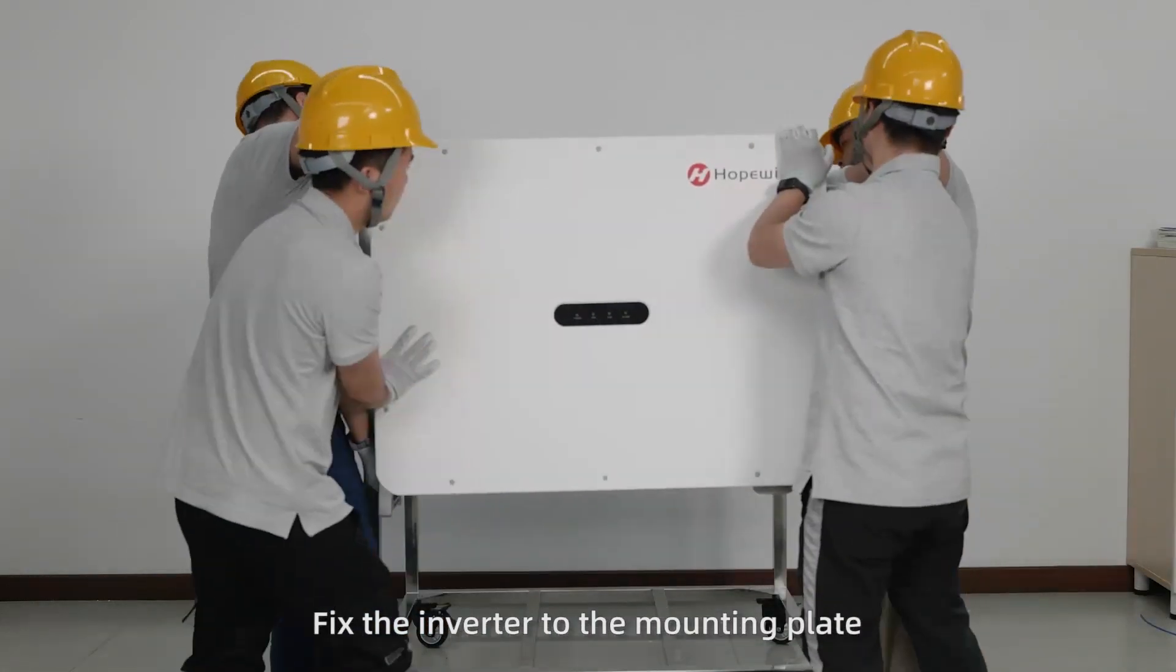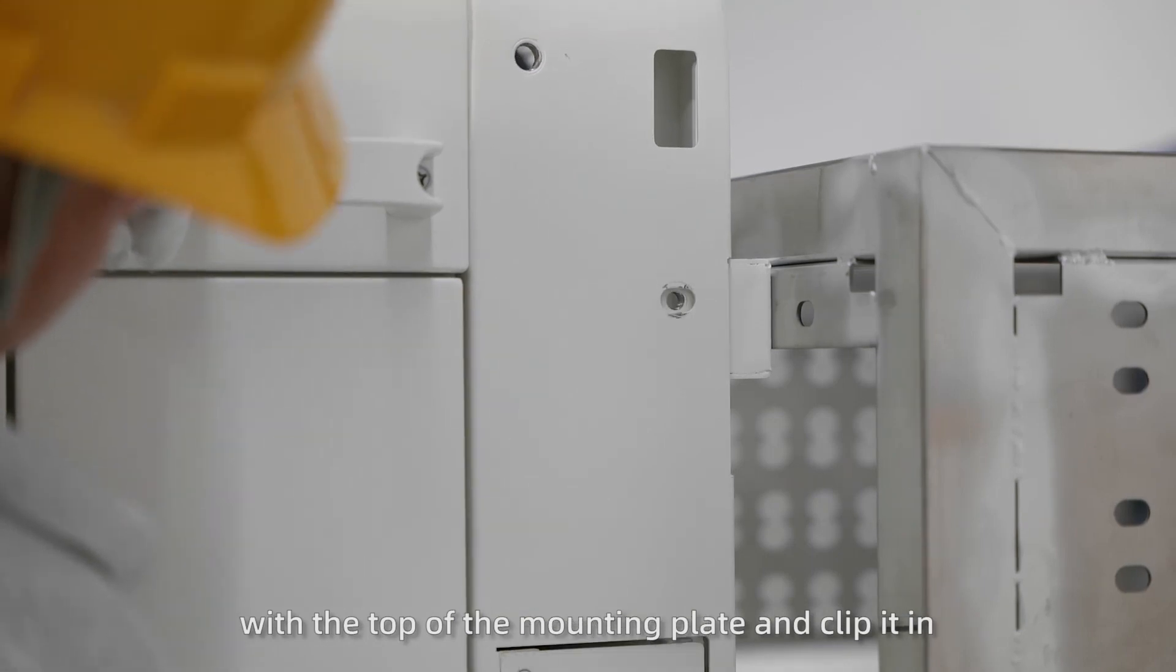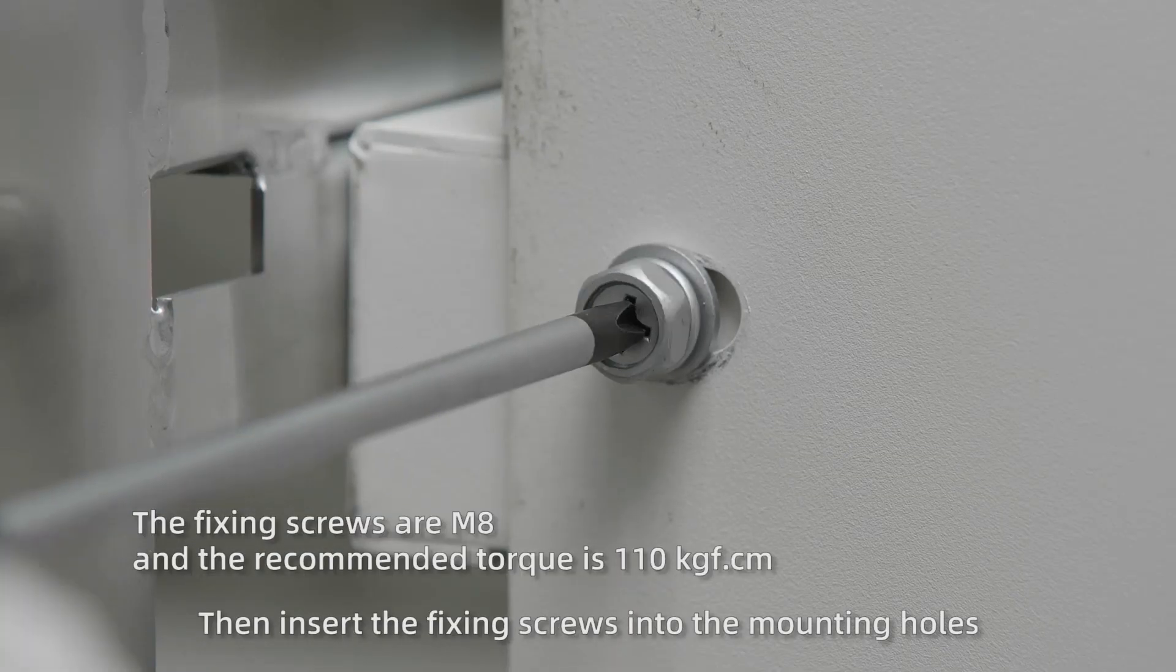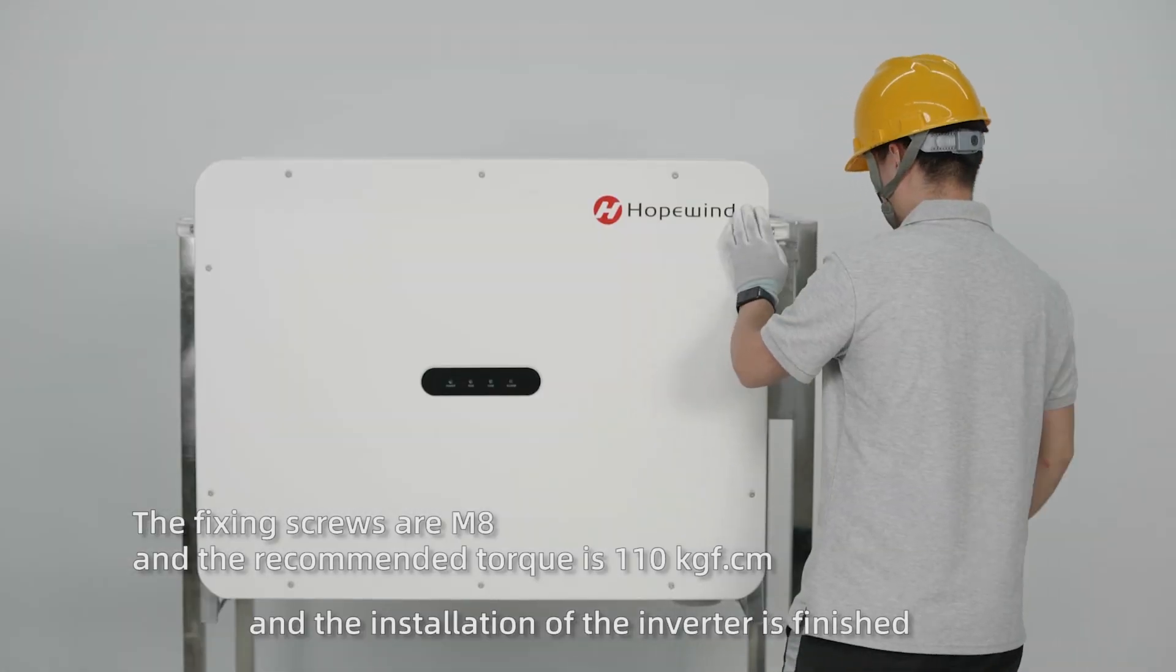Fix the inverter to the mounting plate. Align the gap at the back of the inverter with the top of the mounting plate and clip it in. Then insert the fixing screws into the mounting holes, and the installation of the inverter is finished.